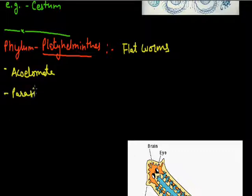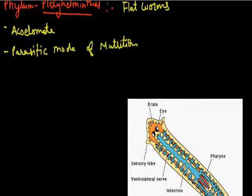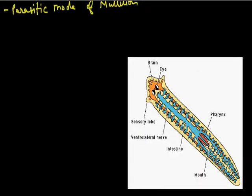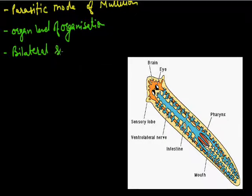These animals are parasitic in their mode of nutrition — they are generally parasites. They are multicellular and have an organ level of organization, meaning they have organs in their body structure. These animals are bilaterally symmetrical, meaning the animal body can be divided into two equal parts through a single plane.